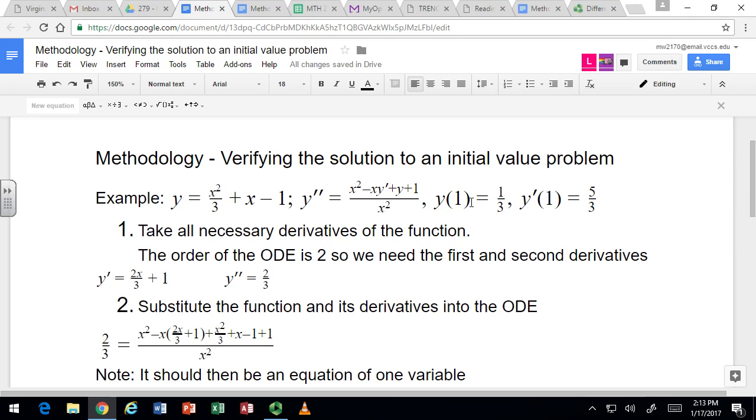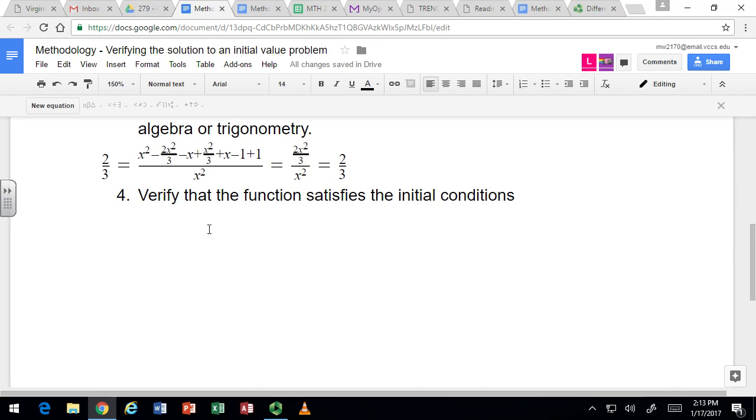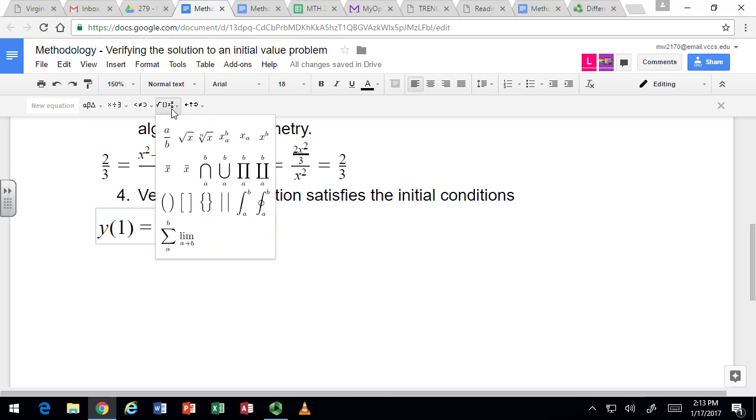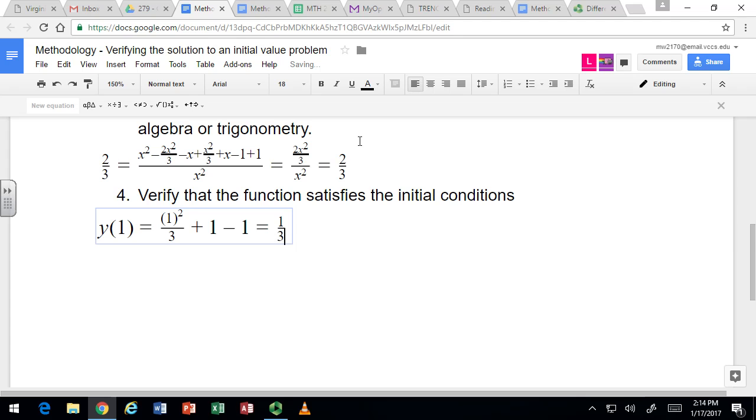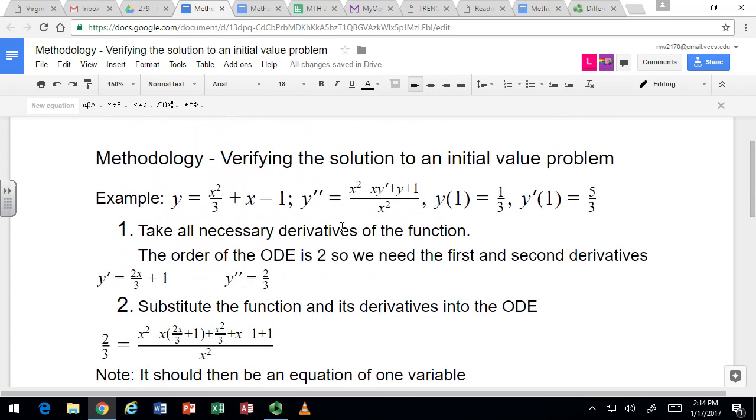These are just function evaluations, but we need to check both of them. So let's take the function, which we're pretty sure is the solution, and evaluate it at one. And this is pre-calc stuff, so it should be pretty easy. Replacing x with one. Simplifying, that's one third plus one minus one. It should be one third. Which is what we wanted, right? It should be equal to one third.